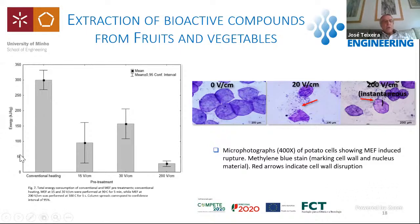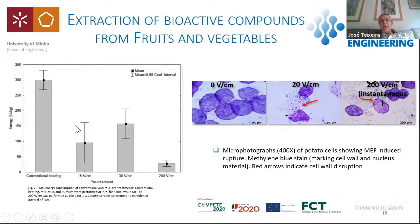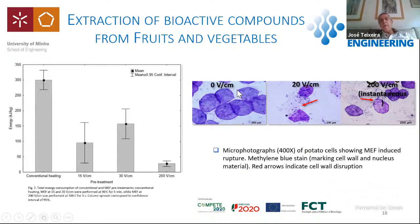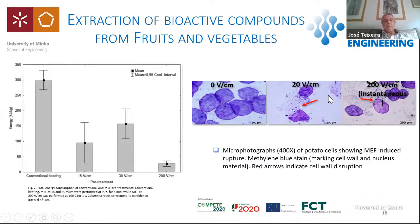This does raise some issues related with energy. However, this is a very efficient process in terms of energy when compared to conventional heating. You can also see in the photographs that ohmic heating acts by disrupting the cell wall, as opposed to what happens in conventional heating. You can see the potato cell wall rupture — it is permeabilized and extraction takes place.